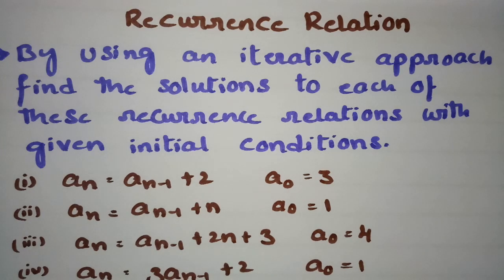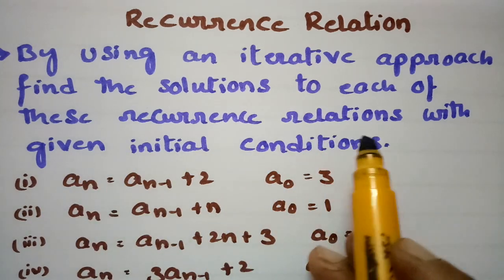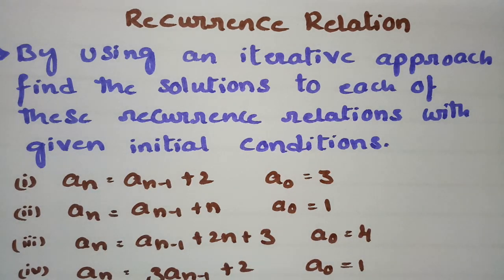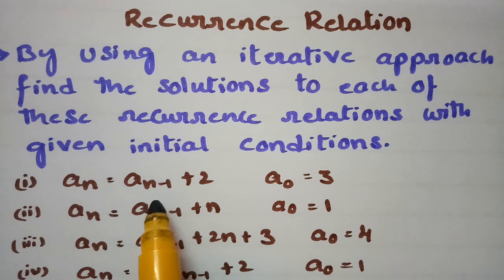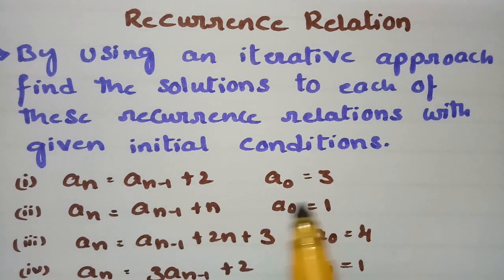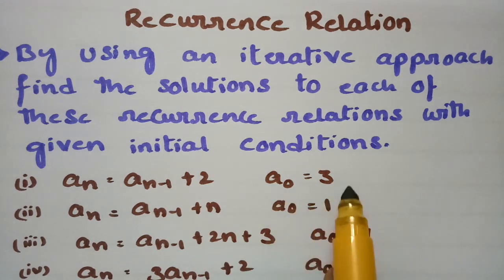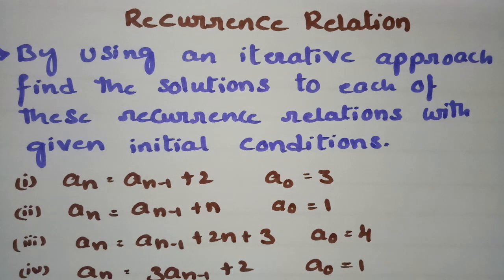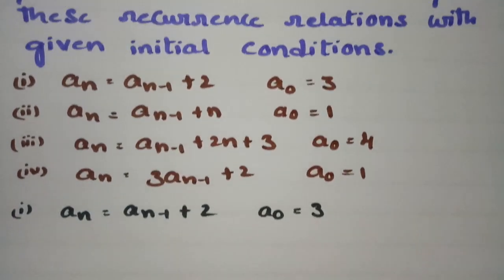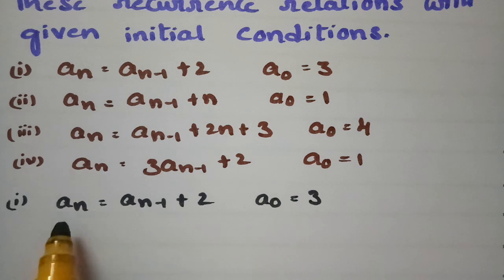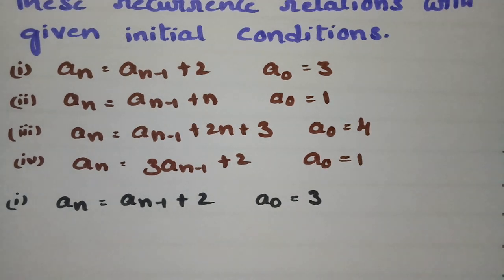In today's video I am going to solve problems using the iterative approach. We have to find the solution of each of these recurrence relations with the given initial conditions. This is a problem related to discrete mathematics, and the topic is recurrence relations. The first question is aₙ = aₙ₋₁ + 2, where a₀ = 3.